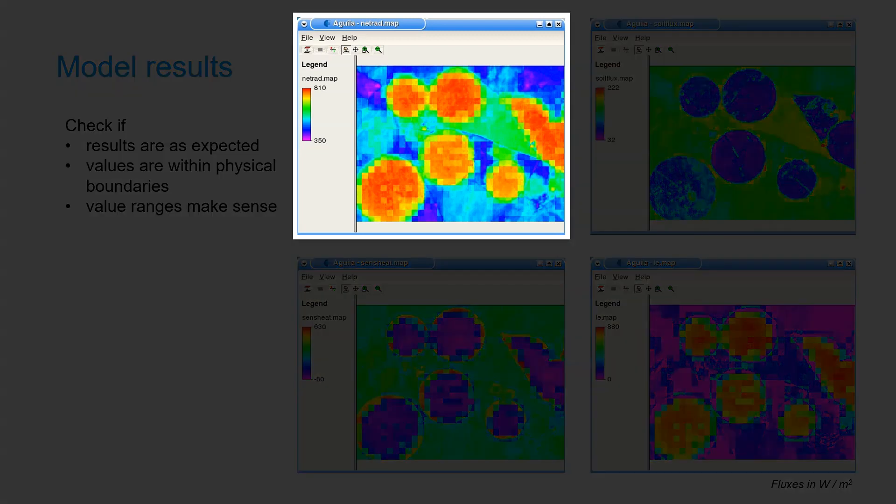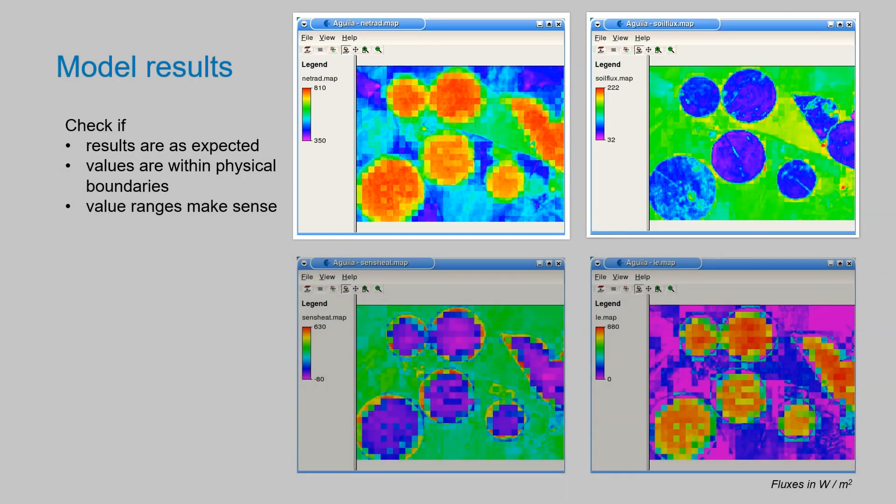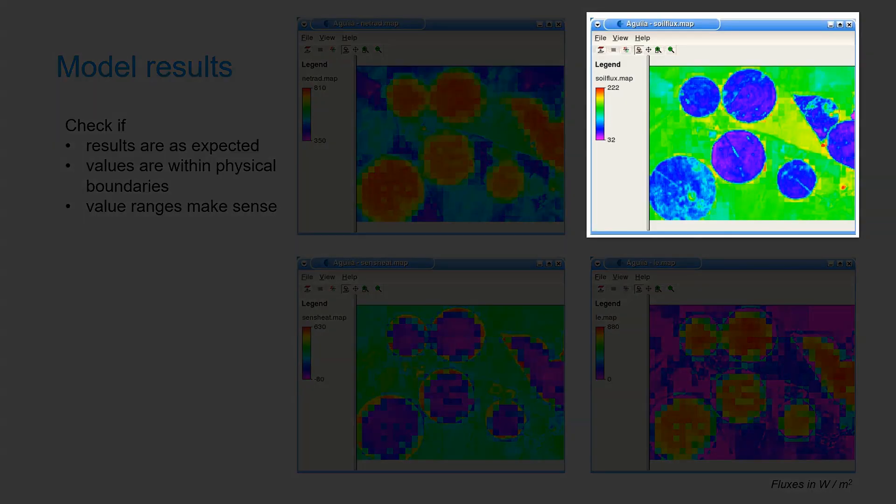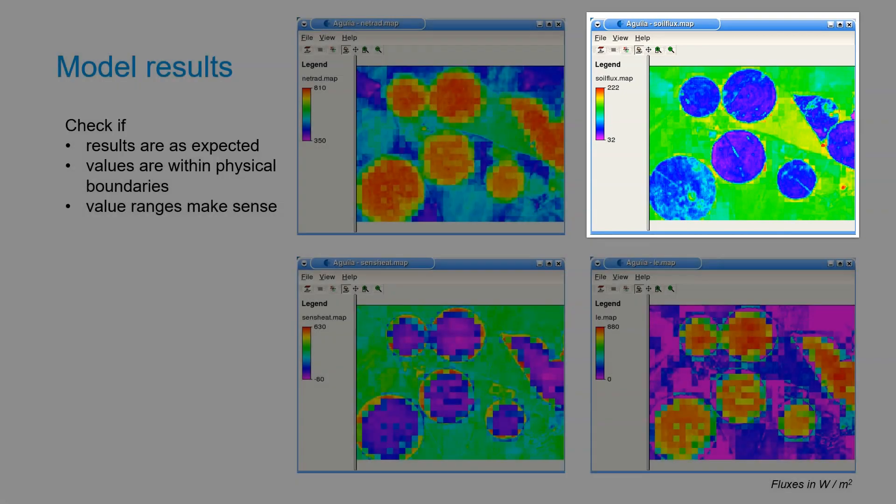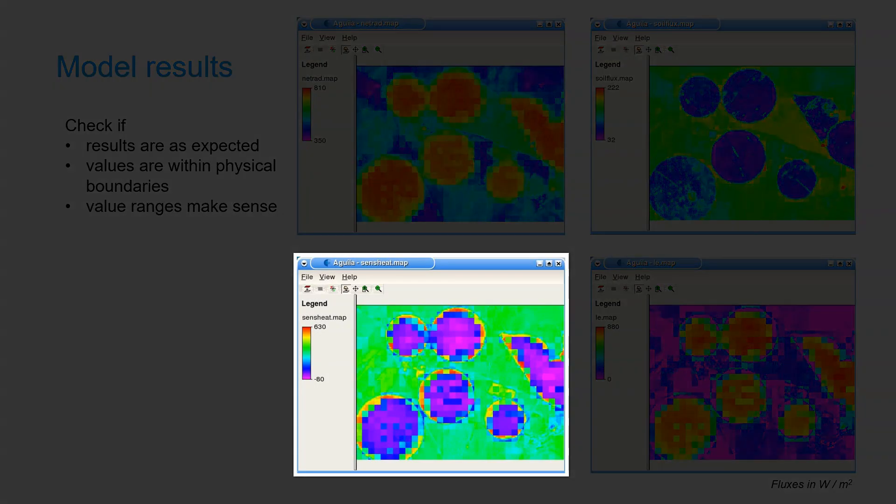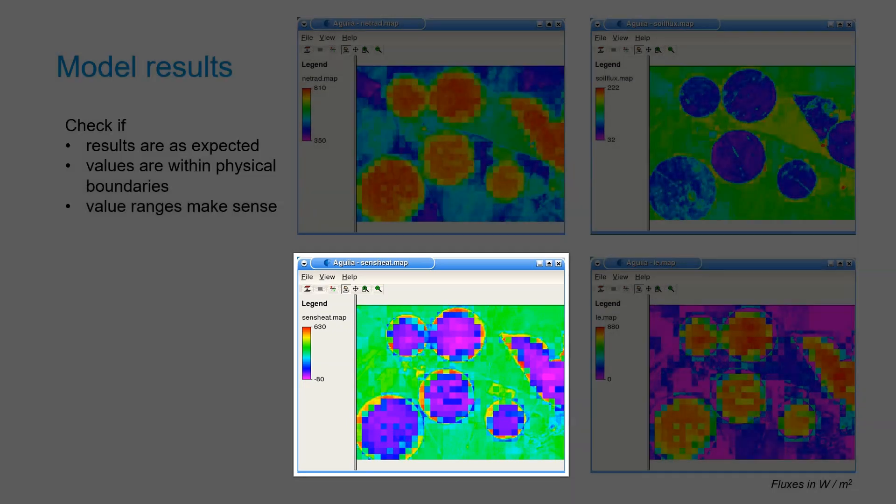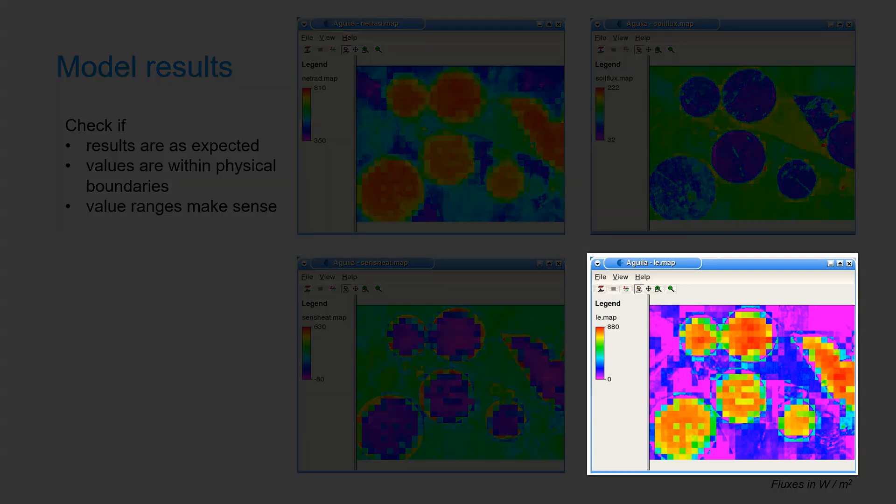In the pictures of the slide you see the net radiation which has a longer range than the other fluxes. The soil heat flux has the shortest range. The sensible heat flux can also be negative because of the oasis effect explained in the previous video. The latent heat flux shows the inverse of the sensible heat flux for the irrigated pivots.